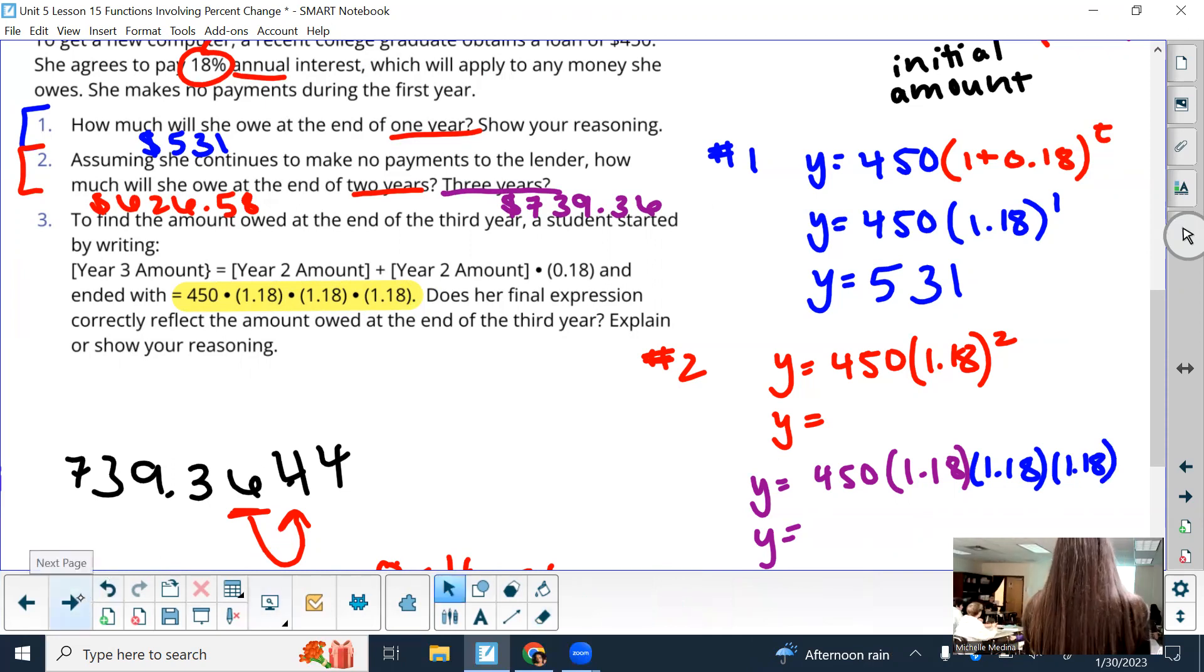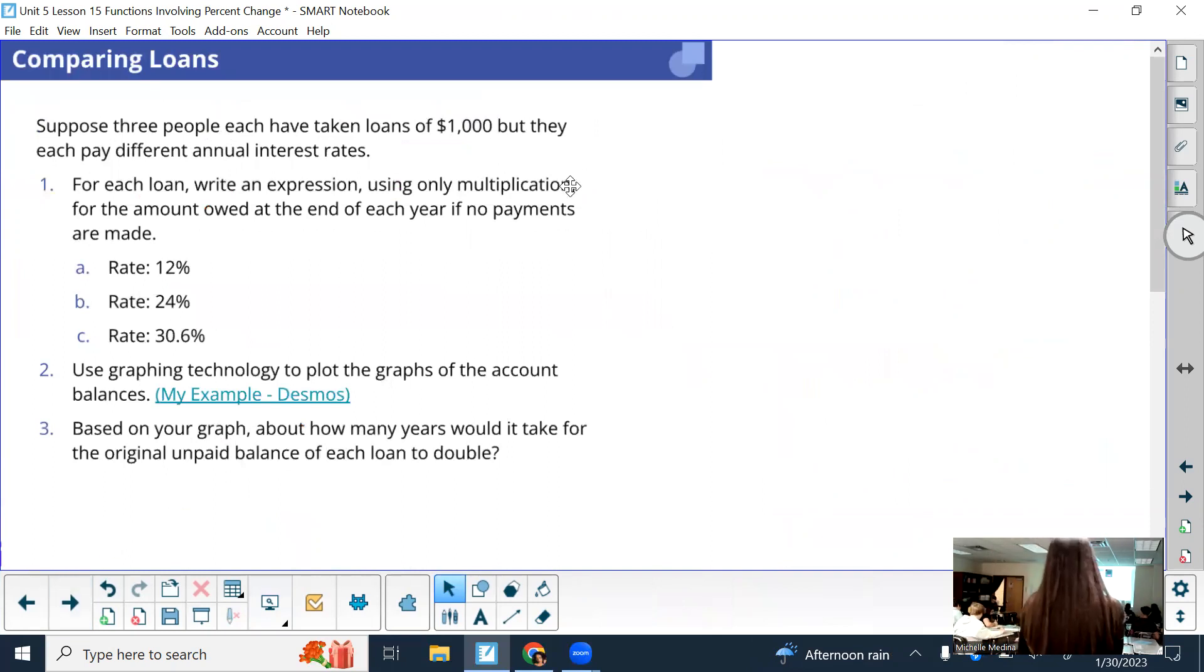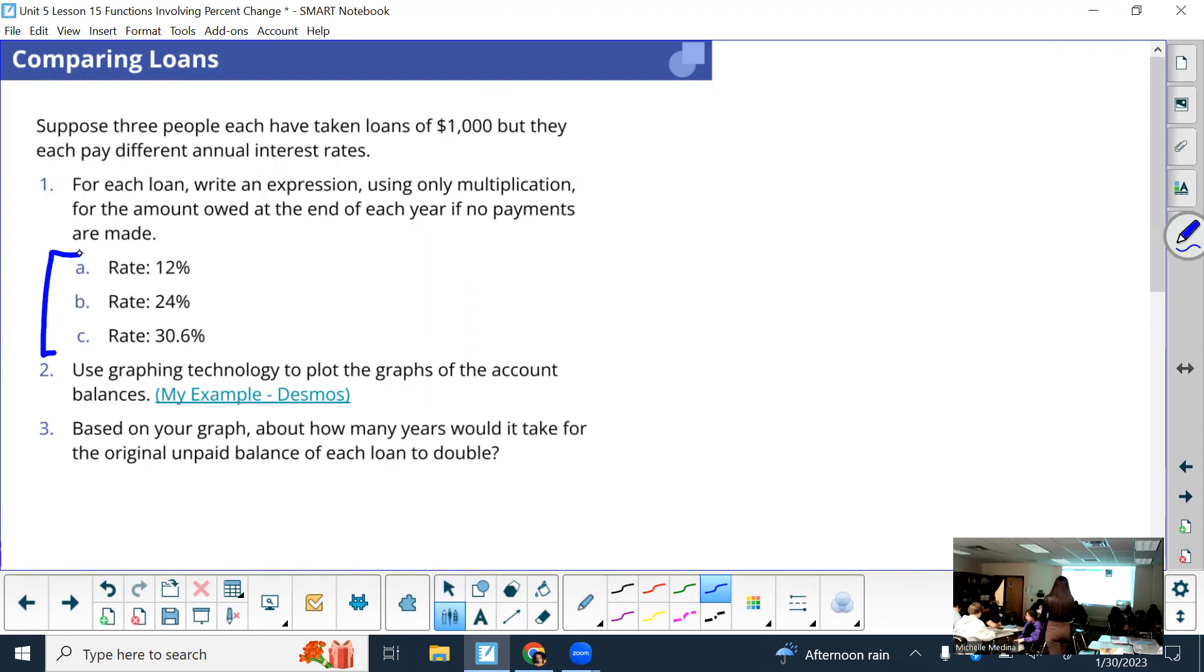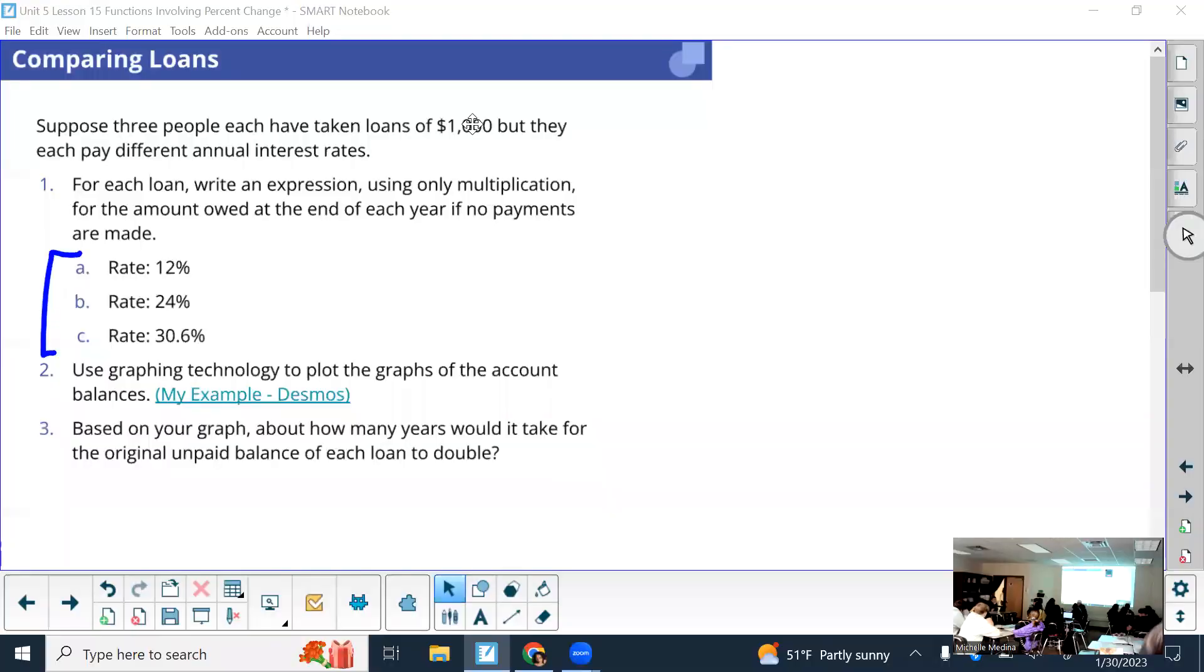All right. Moving on to the backside. So, we're going to change the situation slightly. And this is going to be more of a you try. So, three people have each taken loans of $1,000. But they each pay different annual interest rates. Here are those interest rates. For each loan, you guys in your groups are going to write an expression using only multiplication. So, in other words, make it an exponential function. For the amount owed at the end of each year if no payments are made. But do that within your groups. I don't think it takes very long. But I'll give you three minutes anyway since it's three different problems. Make sure you all agree.